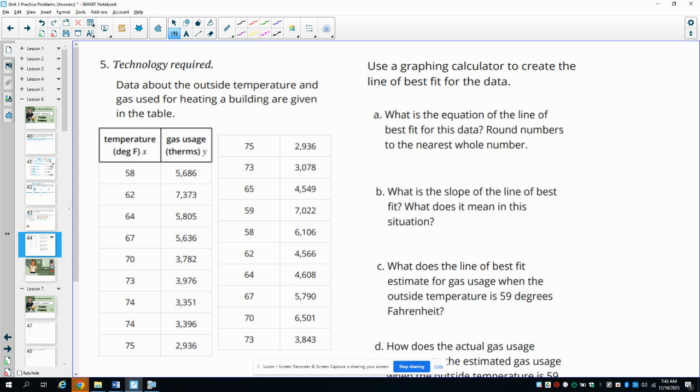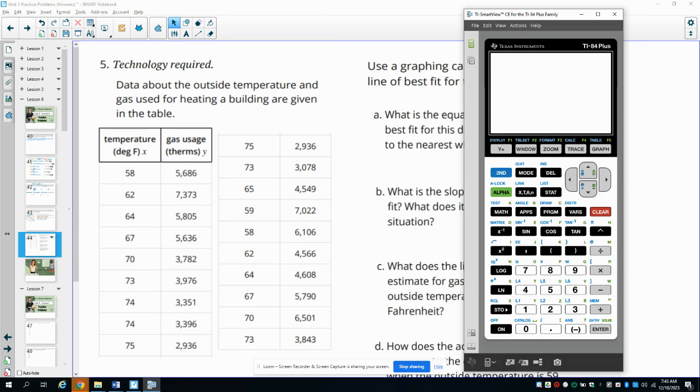Number 5, use a graphing calculator to create the line of best fit for this data. So this is a lot of data here to type in. So you want to type in all of these data points. You can use your graphing calculator for this, or you could use a website. So just a reminder of how you do that. You click stat, and then you edit your lists, and you type it in. Now I've already typed it in, so if you need to pause the video and type your data in, that's fine. Make sure you go ahead and check that you have everything typed in correctly.